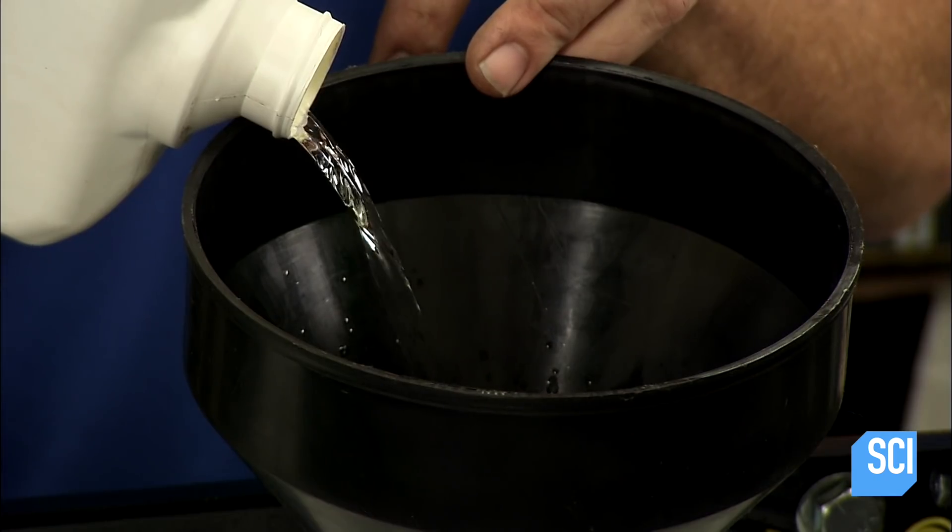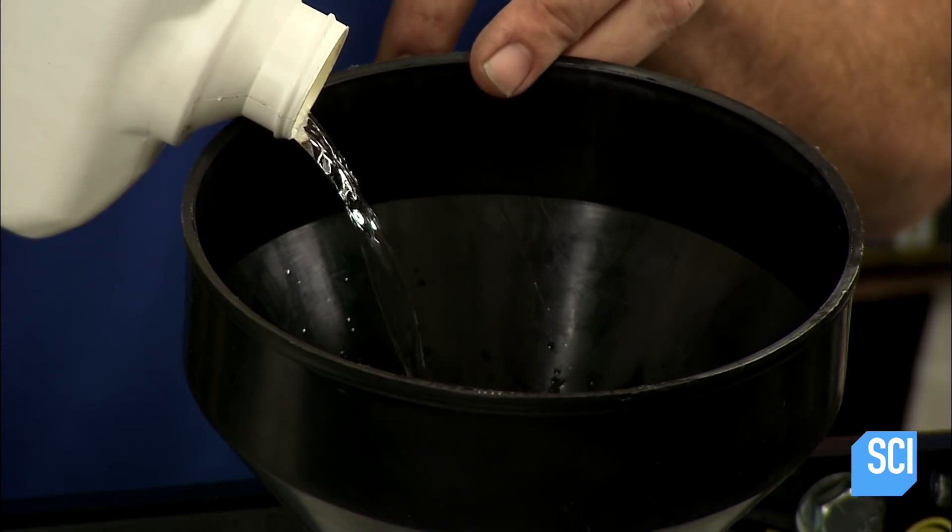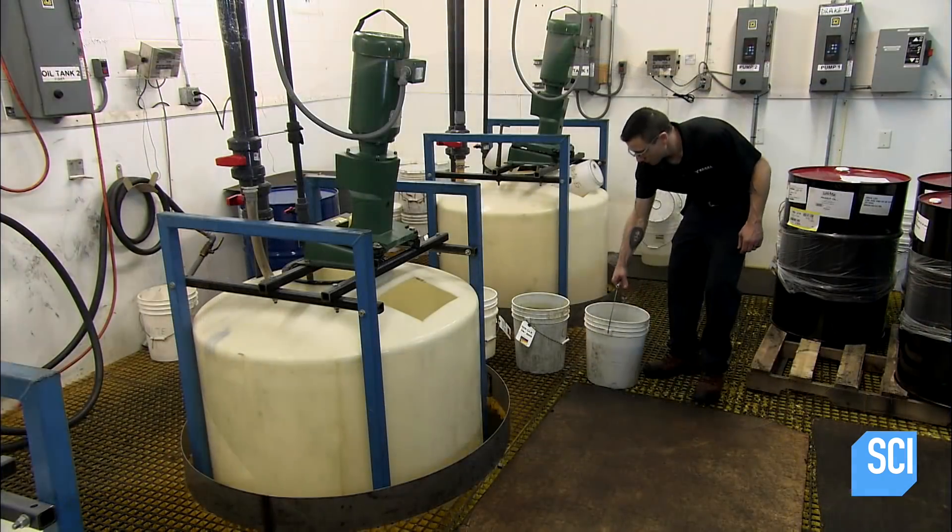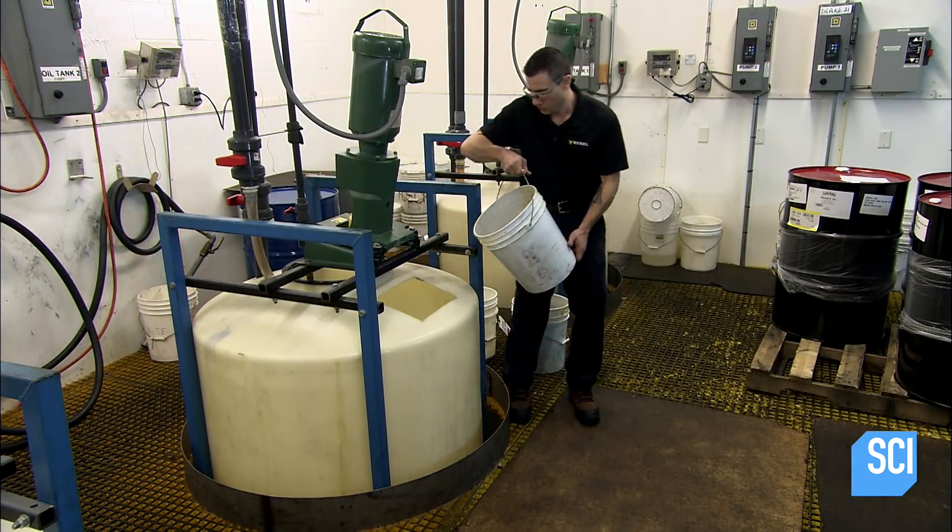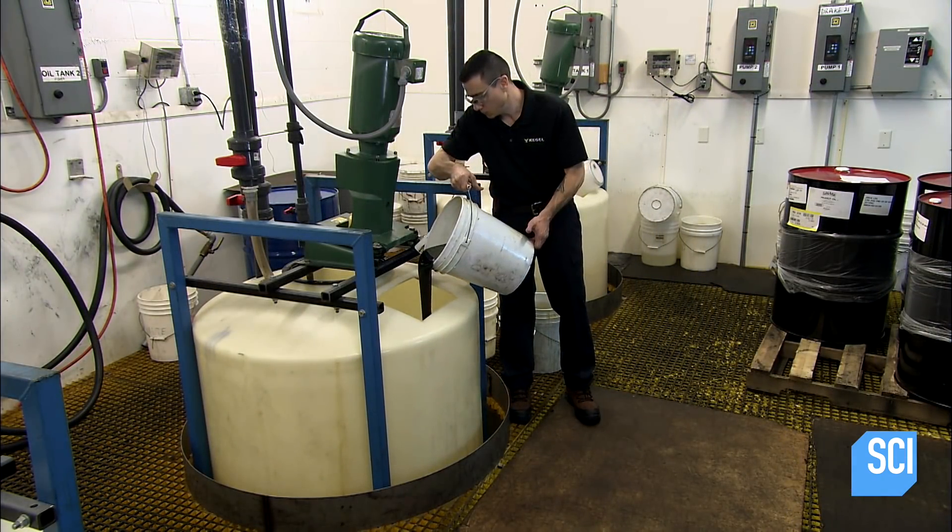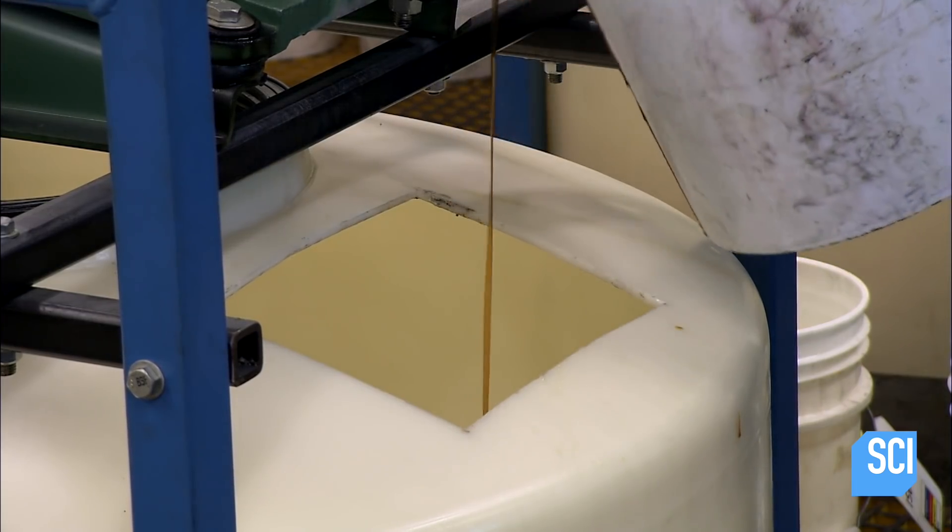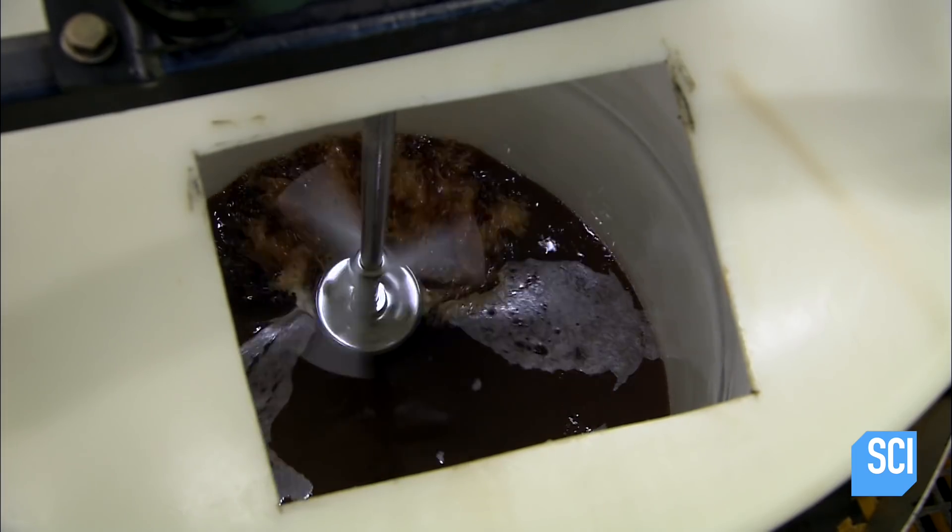He adds cleaning solution to the tank and it's time to prepare the lane conditioners. They mix the mineral oil based conditioners in big blenders. There are nine different recipes with up to 16 ingredients in each one.